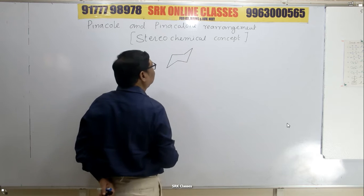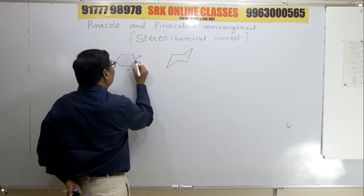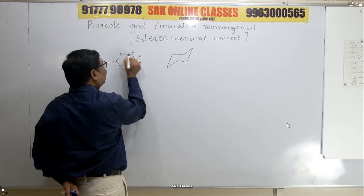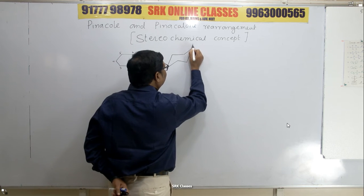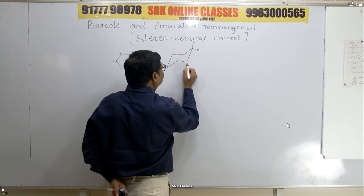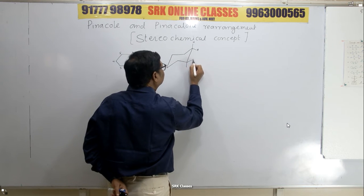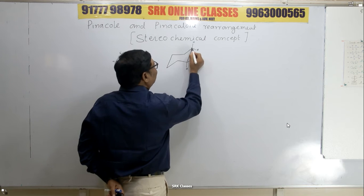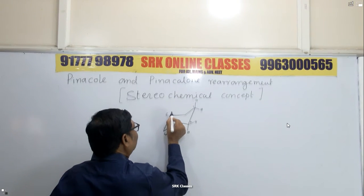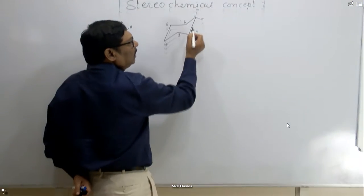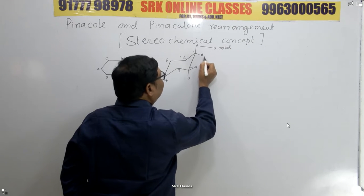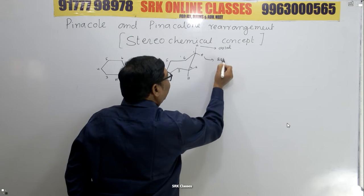This is the chair form. Carbon one, two, three, four, five, and six — the same six carbons are there, each carbon having two hydrogens. In the chair form, these hydrogens are called axial hydrogens and these are called equatorial hydrogens.